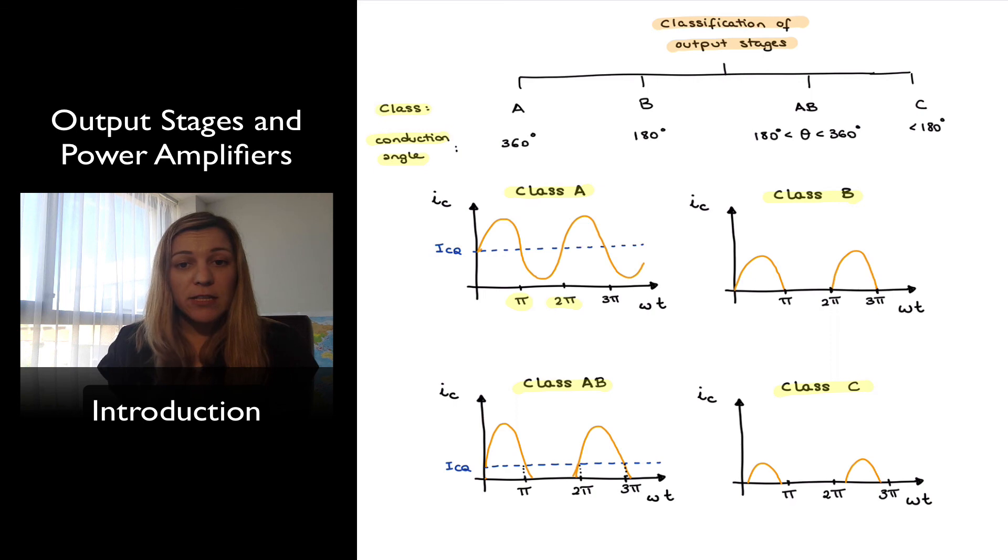And finally the Class C amplifier, the conduction angle is less than 180 degrees meaning they conduct for less than half a period as we see in the figure and therefore they're going to yield the best power efficiency and we shall see that these are typically used in TV systems for example.